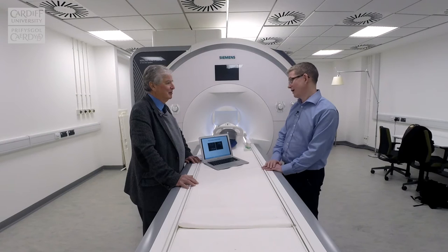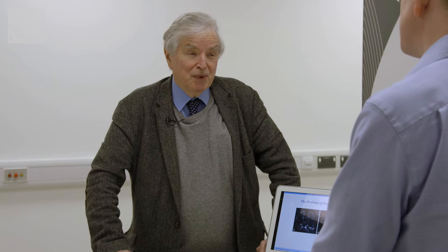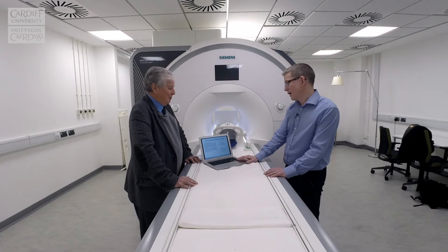One of the images you wanted to look at was this result from 1990 - from Doran and Bydder's paper - and you can quite clearly see the artifacts there. So EPI was the solution. How widespread was EPI at the time? At the time that I proposed the first diffusion-weighted echo planar sequence, there were only about three sites in the world - two of which were in Nottingham: my scanner and Peter Mansfield's scanner - and then over in Massachusetts there was Rzedzian and Pykett's echo planar scanner.